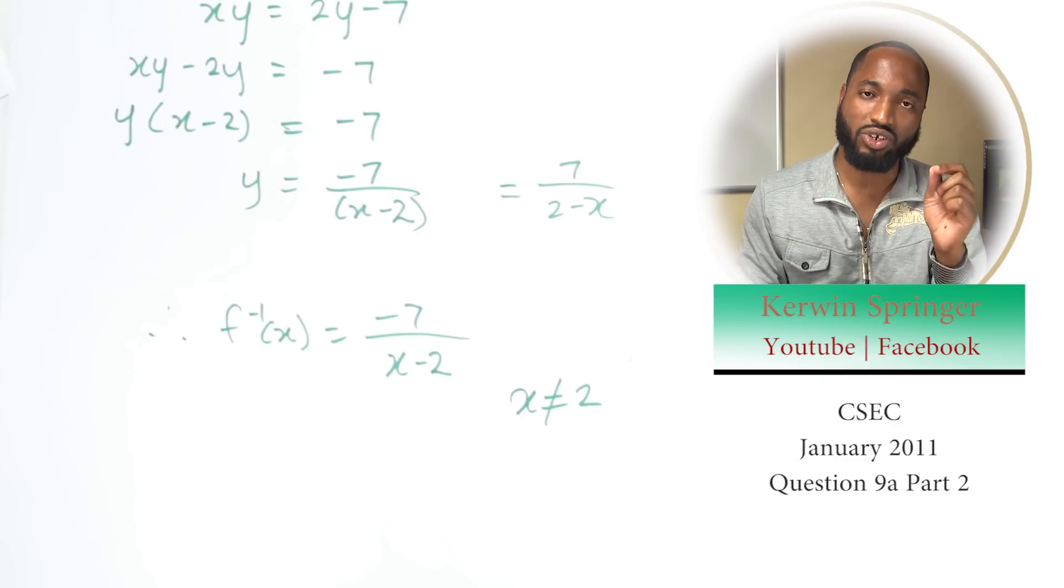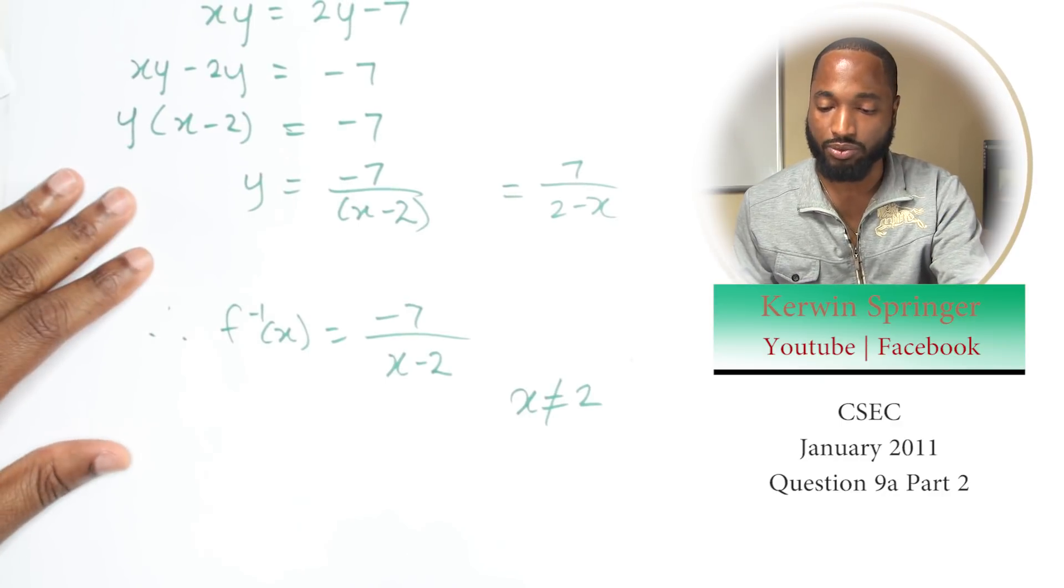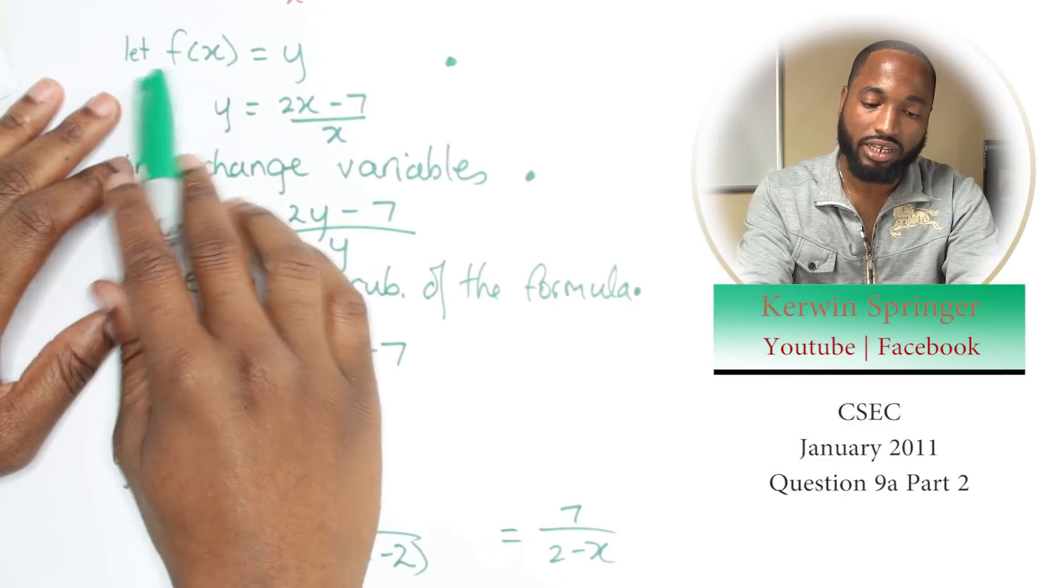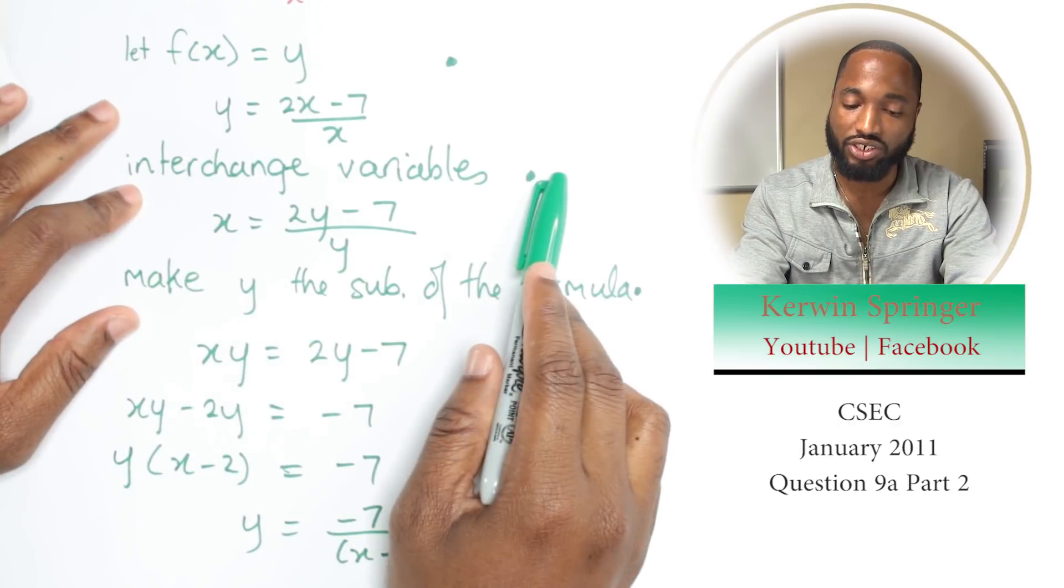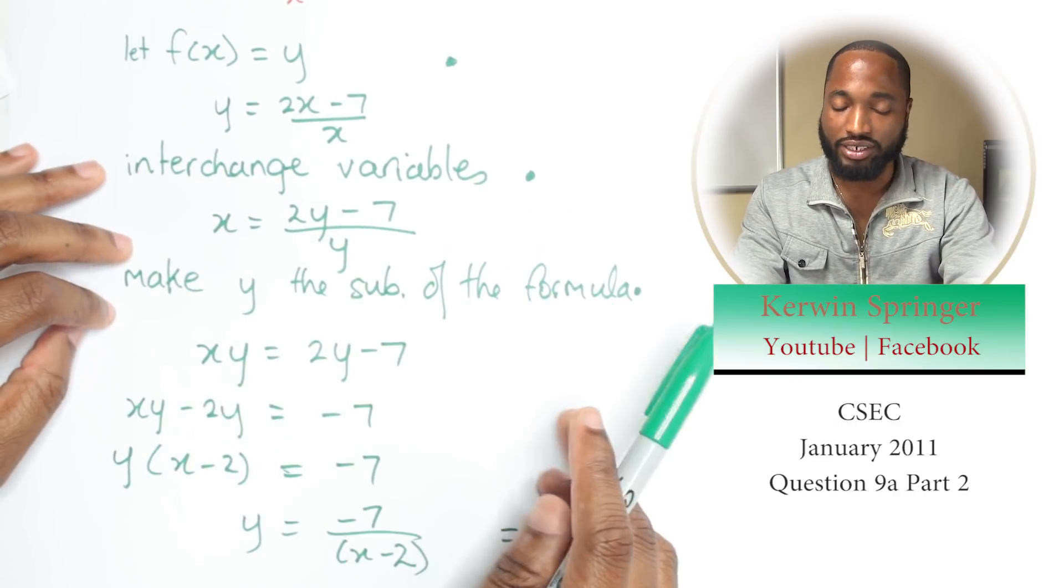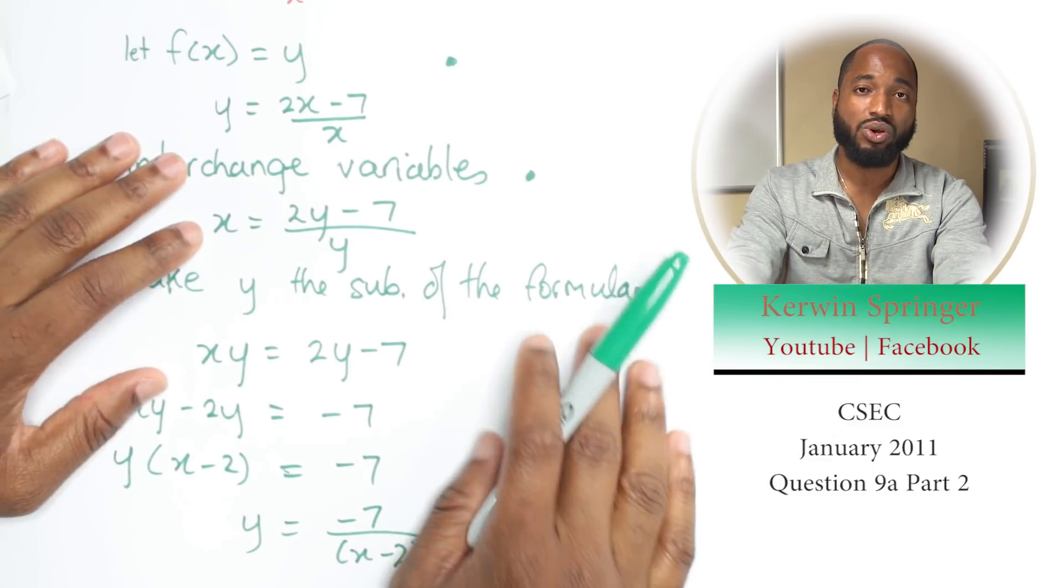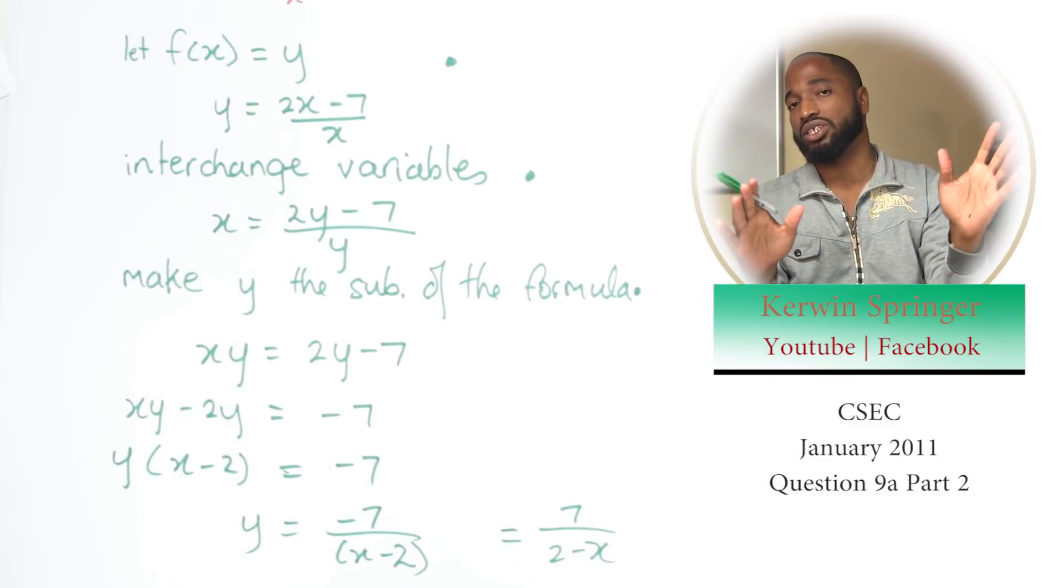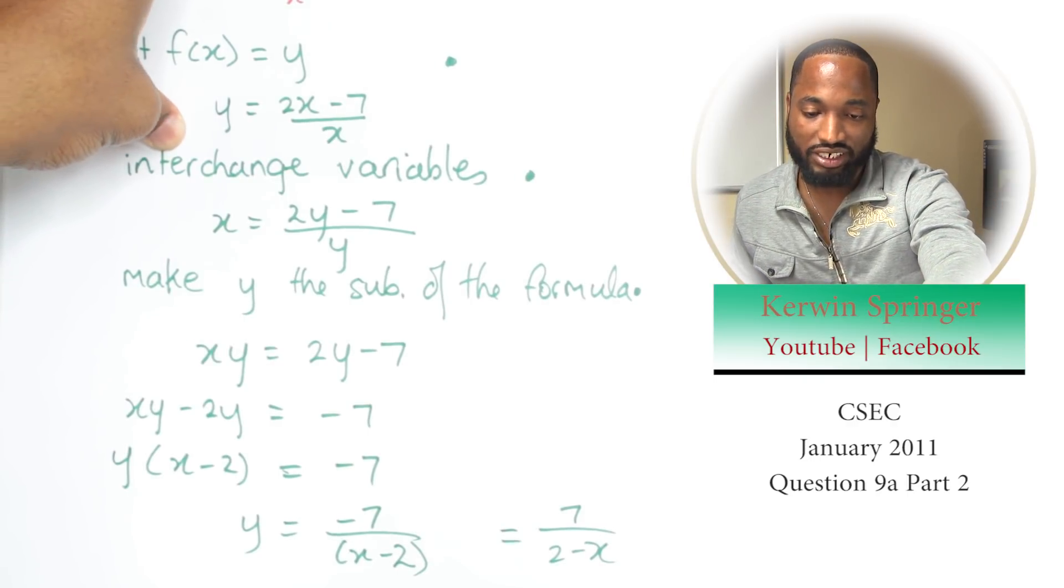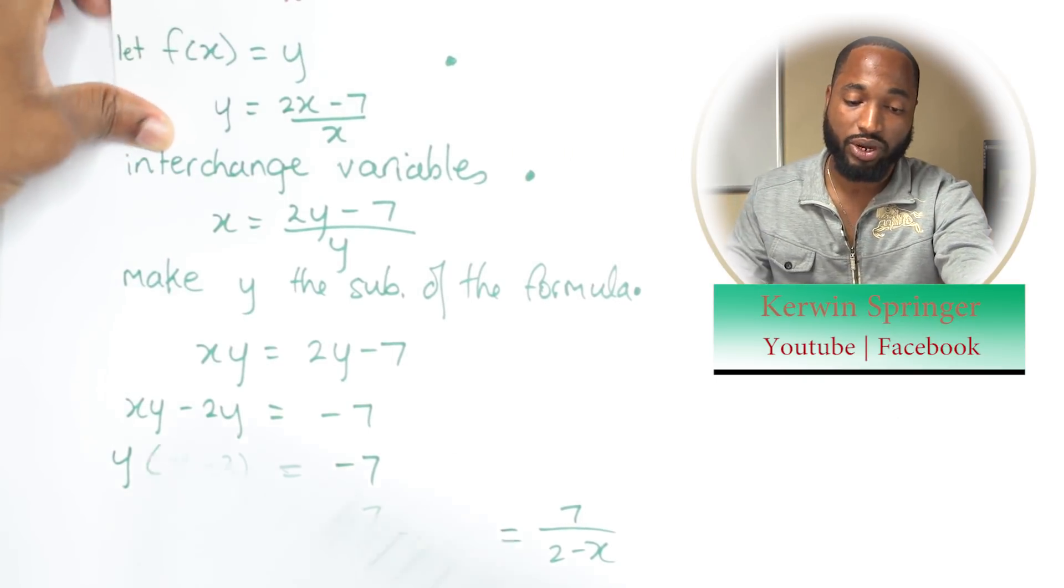So x can't be 2, otherwise you'll end up dividing by 0. So once again, let x equal y, interchange the variables, switch it up. x and y switch up, and then make y the subject of the formula. This is how you do any inverse questions CXC can bring at you. Any questions, leave it in the comments. I'll address if you don't know if you want to read it.